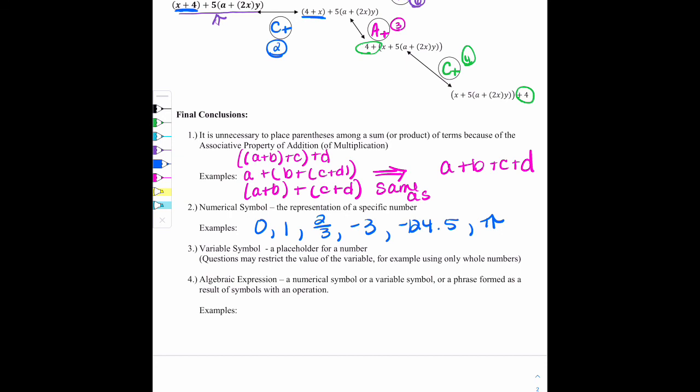Which is different from what we know about as a variable symbol. For a variable symbol, we're talking about a placeholder for a number. So questions may restrict the value of the variable, for example, using only whole numbers. So just know that a variable is a placeholder. For the most part, the variable can be any real number unless the directions state otherwise and say you're only allowed to use certain types of numbers. For example, x is a whole number.